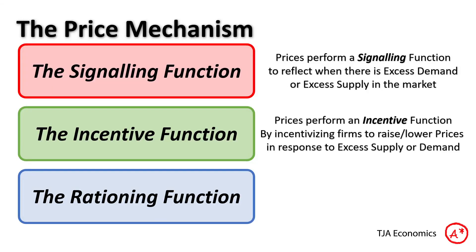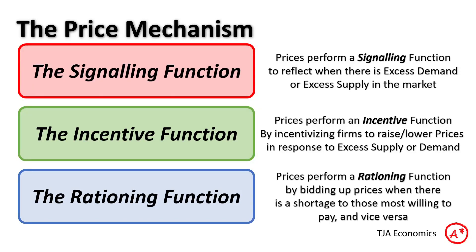The incentive function then — prices perform the incentive function by incentivising firms to raise or lower their prices in response to excess supply or demand. And then lastly, the rationing function: once prices have changed, prices perform a rationing function by bidding up prices in a shortage for those who are most willing to pay, or vice versa, prices will lower when there's excess supply so that more people can buy the product.